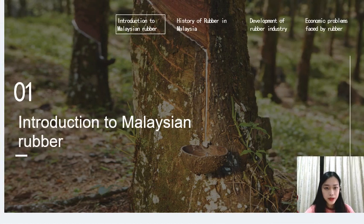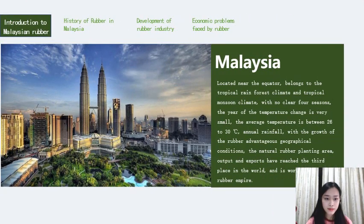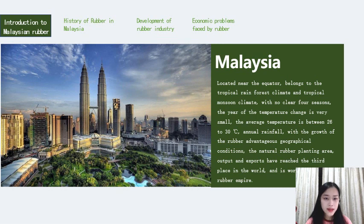Firstly, I would like to introduce Malaysia rubber. Malaysia is located near the equator, belongs to the tropical rainforest climate and tropical monsoon climate. The variation of temperature change is very small. Because of the advantageous geographical conditions for rubber growth, the natural rubber planting area, output, and exports have reached third place in the world, and Malaysia is worthy of the name 'rubber empire.'